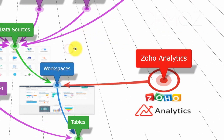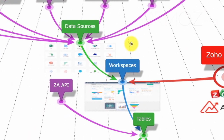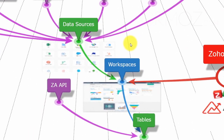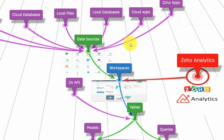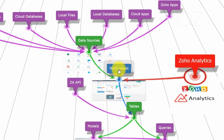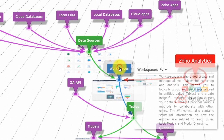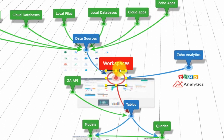A workspace is the primary logical place to create and manage all your data, views, reports, and dashboards. Workspaces are isolated from each other by all means — data storage, user permissions, and dashboards. So, workspaces operate data independently from each other.